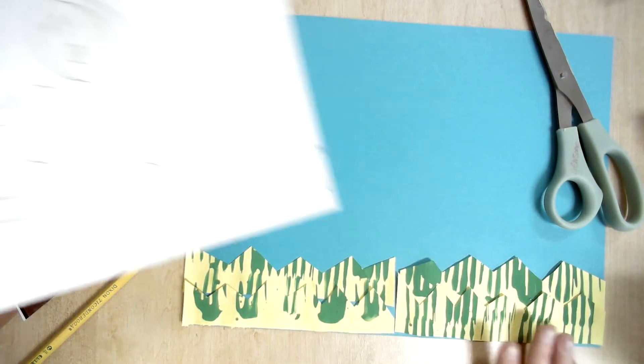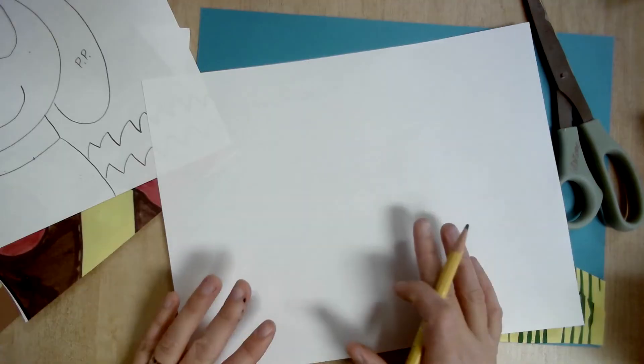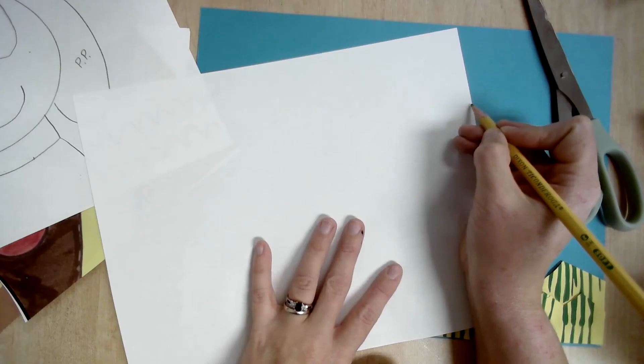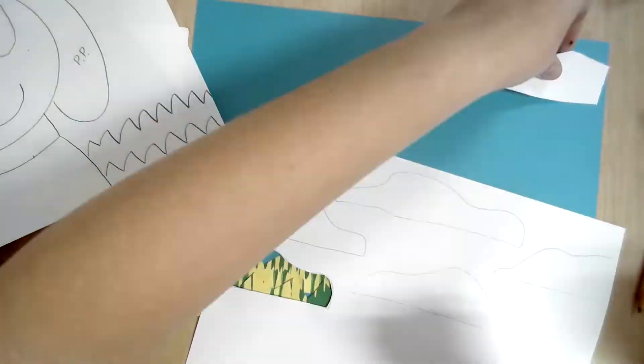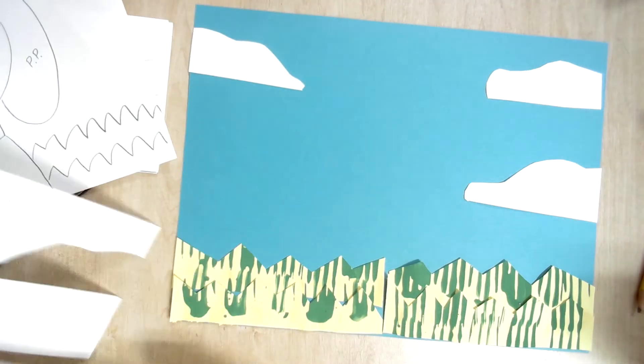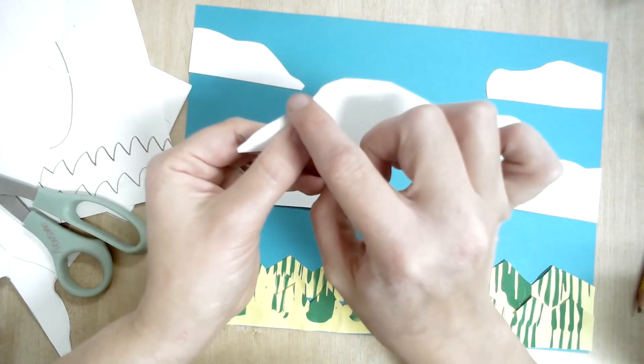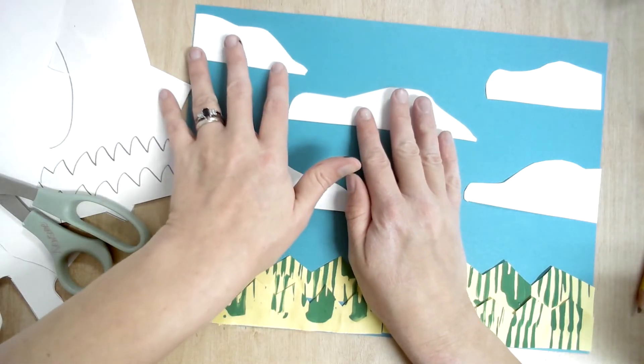So now I have that glued down. The next thing in my background would be the clouds. If you would like to draw your shapes on your paper before you cut it out, that's fine. Draw lightly so that your pencil marks won't show up as much. And I'm also flipping them upside down so that you can't see my pencil lines.